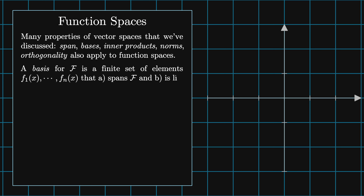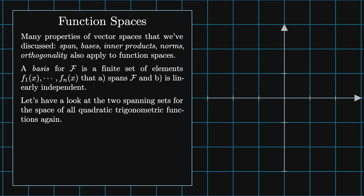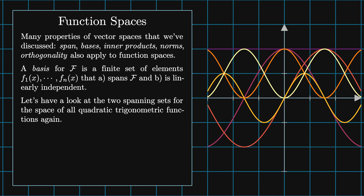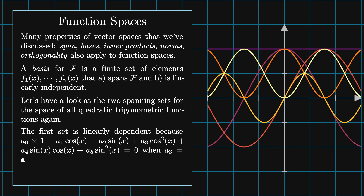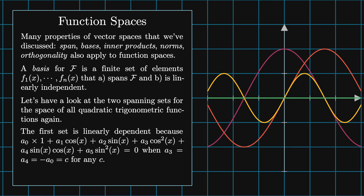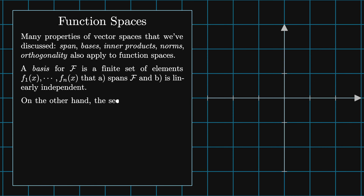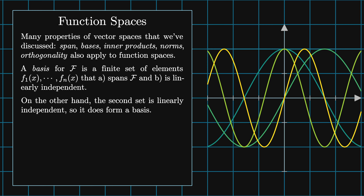A basis for f is a finite set of elements f1 of x through fn of x that (a) spans f and (b) is linearly independent. Looking at the two spanning sets for the space of all quadratic trigonometric functions: the first set is linearly dependent because a0 times 1 plus a1 times cosine x plus a2 times sine x plus a3 times cosine squared x plus a4 times sine x times cosine x plus a5 times sine squared x equals zero when a3 plus a4 equals minus a0 equals c for any value of c. So this cannot be a basis. On the other hand, the second set is linearly independent, so it does form a basis.